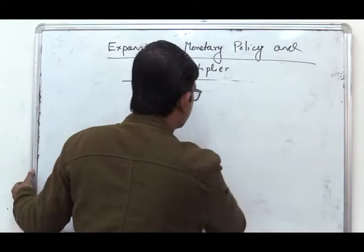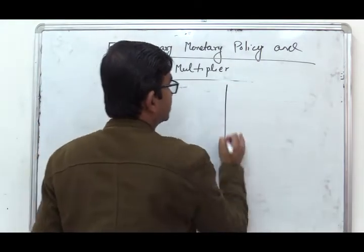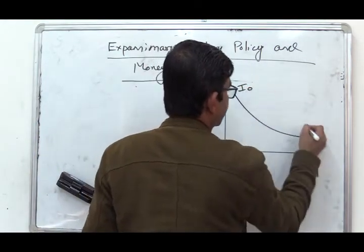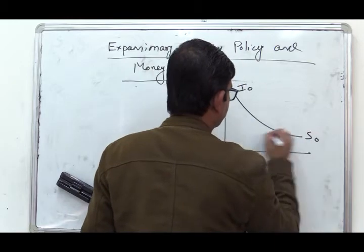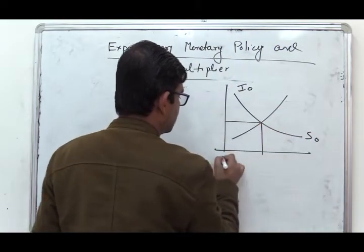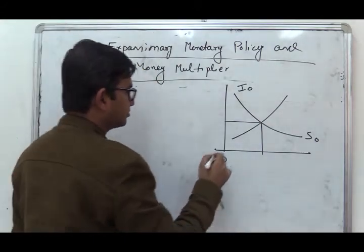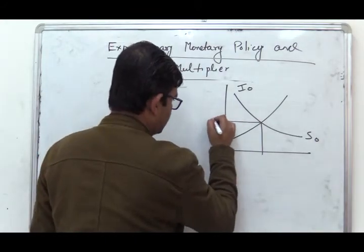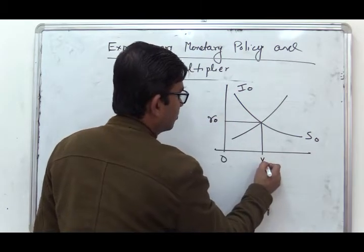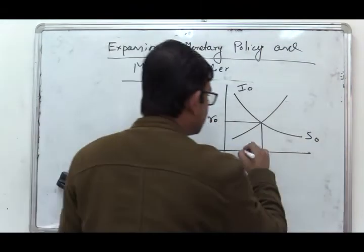The effect of monetary policy can be represented with the help of a diagram. We have the IS curve, with the initial equilibrium at rate of interest R0 and income level Y0, and the initial LM curve labelled LM0.